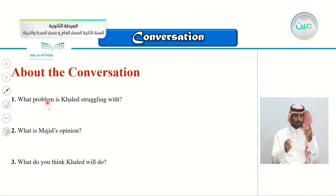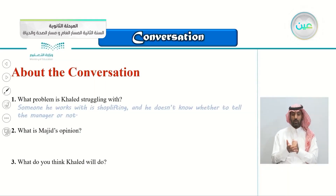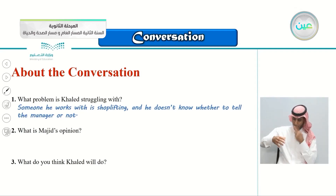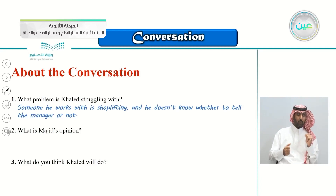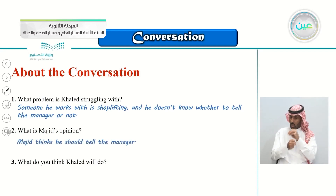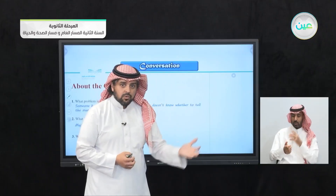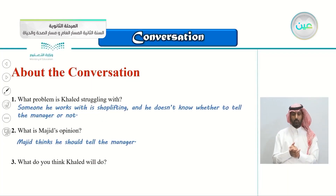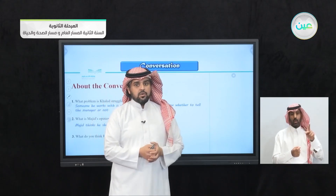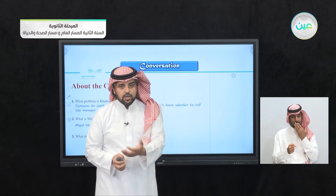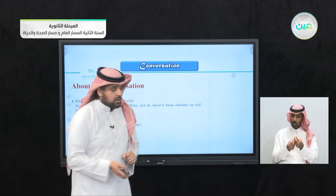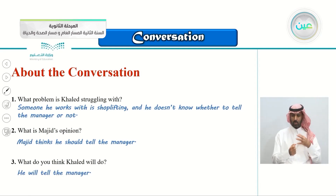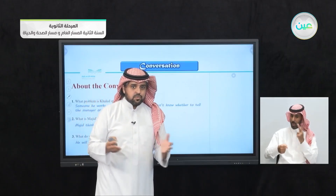About the conversation, we have three questions. First: what is the problem Khalid is struggling with? Someone he works with is shoplifting and he doesn't know whether to tell the manager or not. Second: what is Majid's opinion? Majid thinks he should tell the manager — blow the whistle on him — or Khalid would be in trouble. Third: what do you think Khalid will do? For me, I think he will tell the manager because his co-worker has stolen twice — that's more than enough.